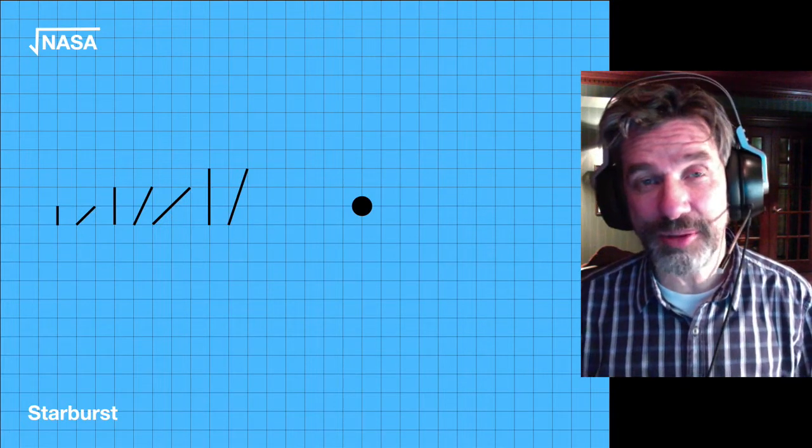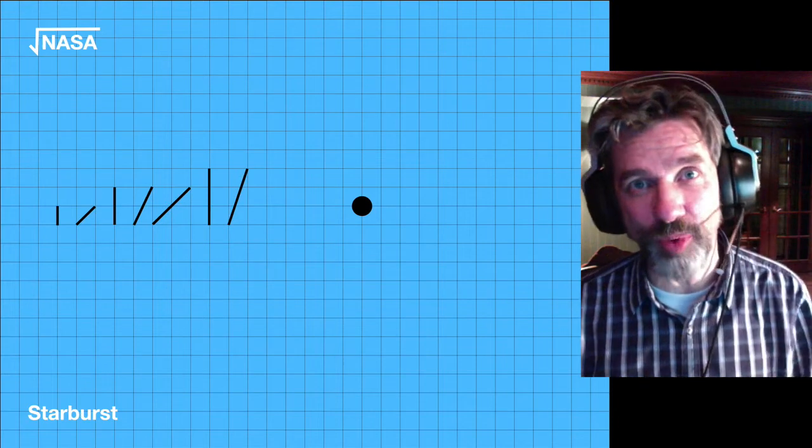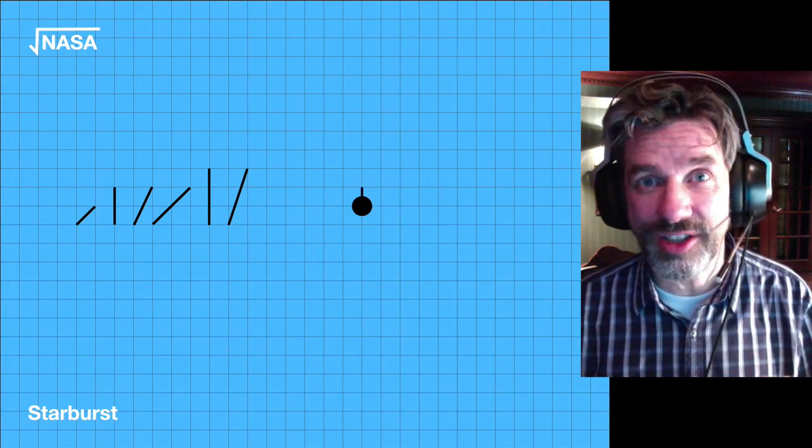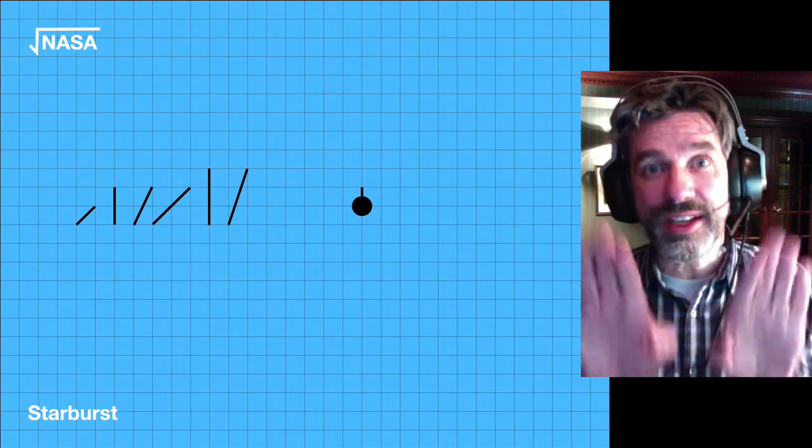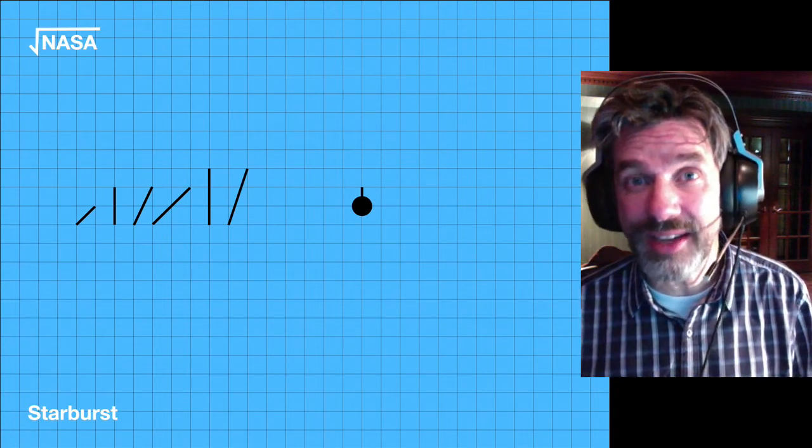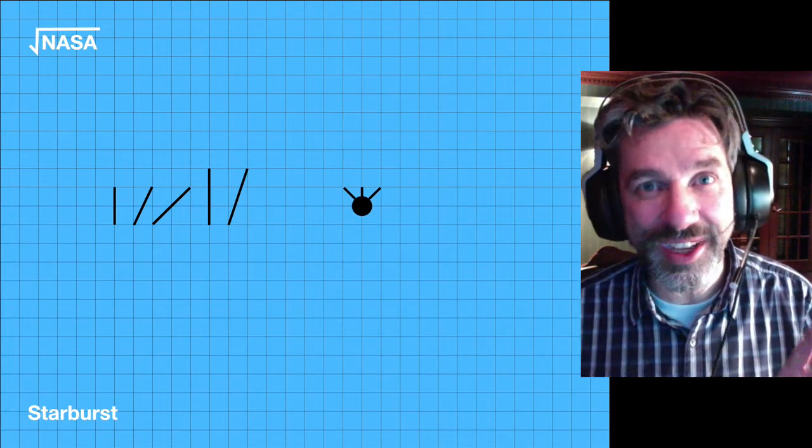So this one is called starburst. We're going to start off by taking that smallest line segment, the one, and we're going to be adding it to the star. Then we're going to be taking the second smallest, the root 2, adding it on either side. We're going to make everything nice and symmetric. Mirror symmetry is going to be in vogue in these starbursts.